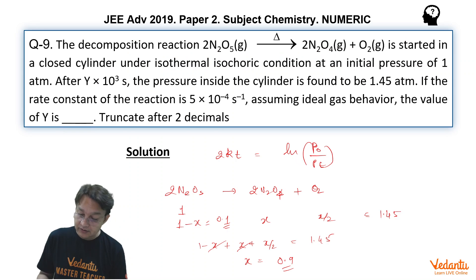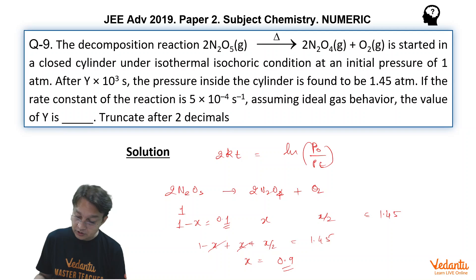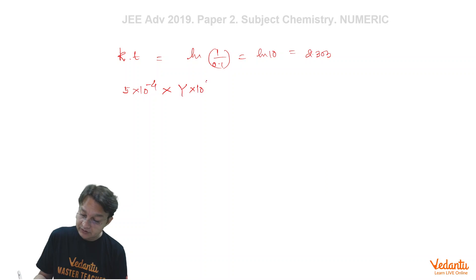Now we have to find the value of k, which is given as 5 × 10⁻⁴. So we can see that 5 × 10⁻⁴ into t is given as y × 10³ seconds. That means y × 10³ must be equal to 2.303, and which gives us y equals 2.303 divided by—I forgot to add here 2, so let me multiply here 2. So if we multiply this, then we have y equals 10 × 10⁻¹ and that is simply equal to 2.303.